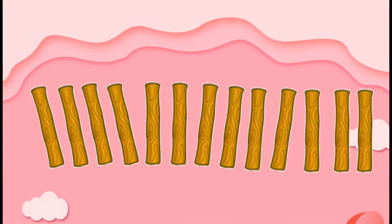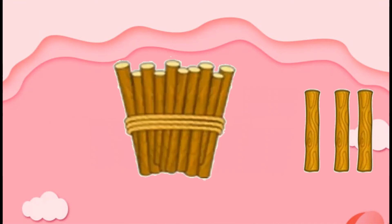So when it is going beyond 10, what we are going to do? We will make a bundle of 10 together. So let's make a bundle of 10 sticks. Now this is 1 bundle of 10. We will count this as 11, 12 and 13. So 13 — how we are going to say it? 1 bundle of 10 and 3 sticks. That makes 13.